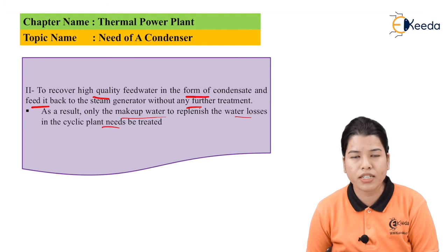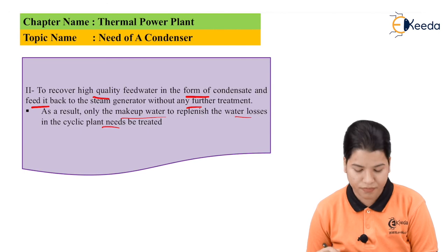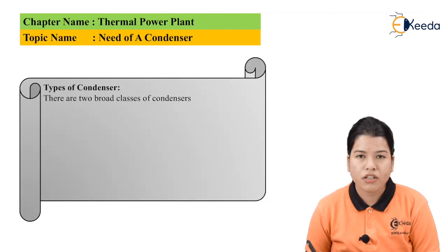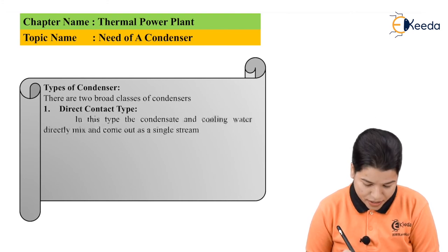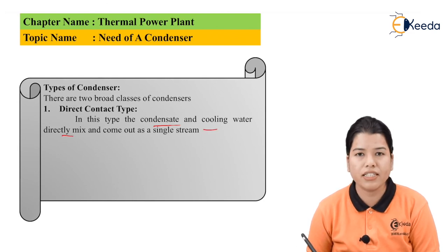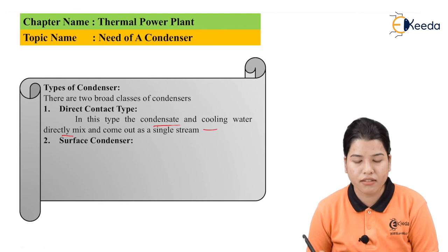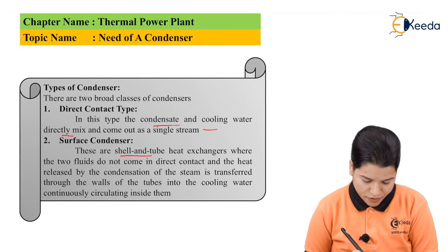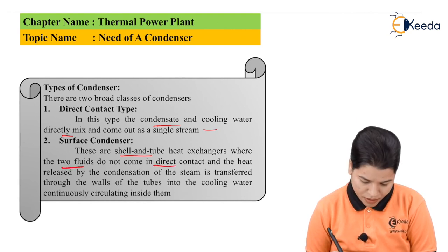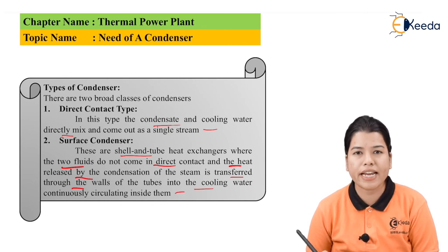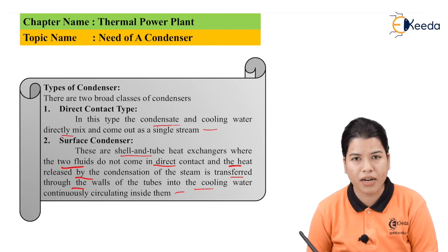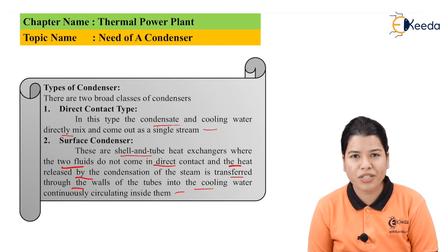These are the two reasons due to which condensers are used in the thermal power plant. Condensers are classified into two broad types. The first is the direct contact type, where the condensate and the cooling water are directly mixed and come out as a single stream. The second is the surface condenser, which is a shell and tube heat exchanger where two fluids do not come in direct contact; heat released by condensation of steam is transferred through the walls of the tubes into the cooling water circulating inside them. We will study these condensers in detail in upcoming videos. Thank you friends for watching this video, stay tuned with Ekida and do subscribe to our channel.